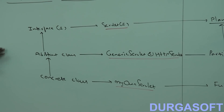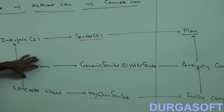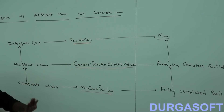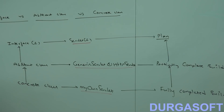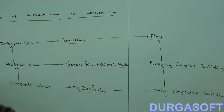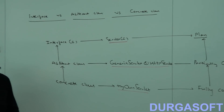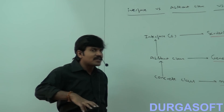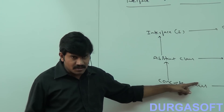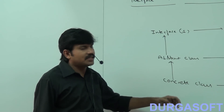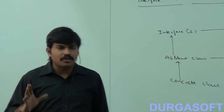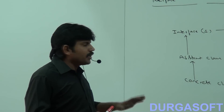I hope it is clear for all of you. Interface is just like a plan. Abstract class is just like a partially completed building. Concrete class is nothing but a fully completed building. In reality, which one is required? We require only concrete classes. Interface and abstract class are intermediate stages to get a concrete class. In the interview room, if anyone asks when we should go for abstract class, interface, or concrete class, we should be in a position to answer.